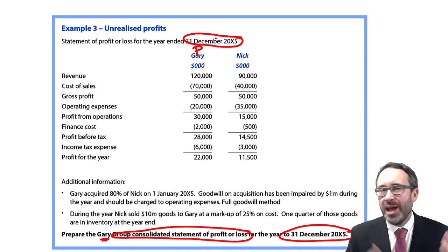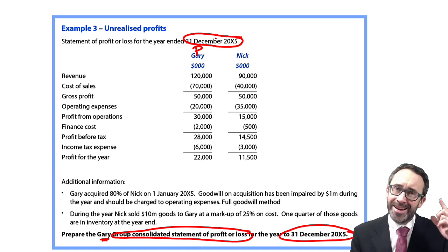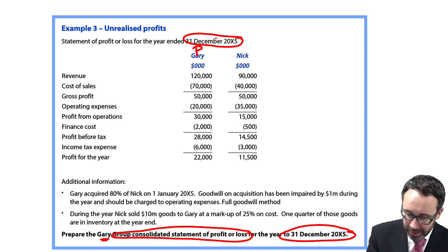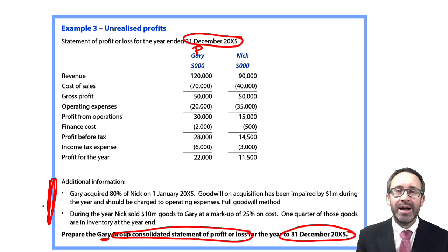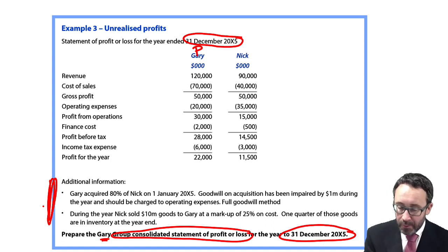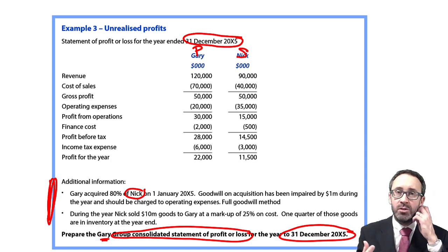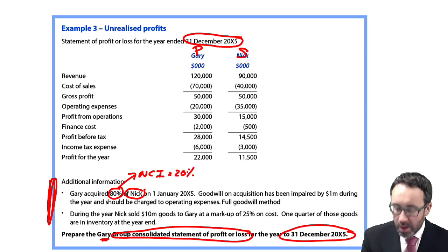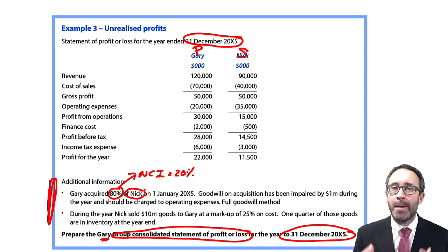The key bit is always the additional information at the bottom. We're told that Gary acquired 80% of Nick, so Nick must therefore definitely be the subsidiary as we have control. We own greater than 50%. Because we have 80%, we then also know the non-controlling interest is 20%.